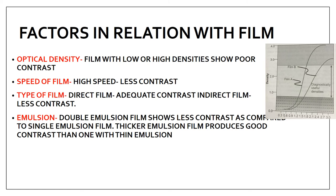The next are the factors in relation with the film. The first is optical density: films with high or low densities show poor contrast. The film should have a proper, optimally useful density so that you have proper contrast. Here is a characteristic curve — it shows the relationship between density, contrast, exposure rate, speed of the film, and latitude. As you increase the exposure rate, density goes on increasing. The density and contrast should be in the proper range to be useful for your film.